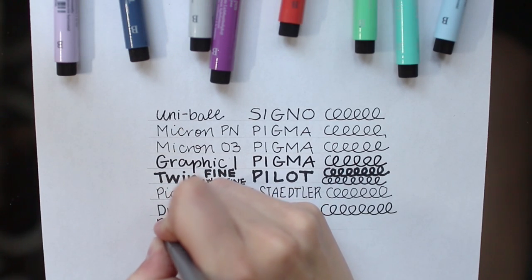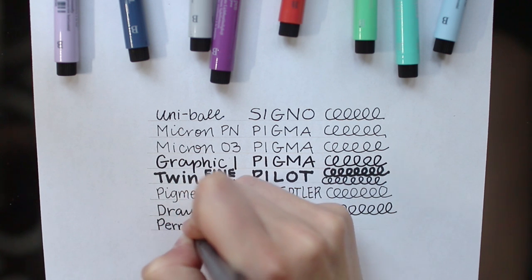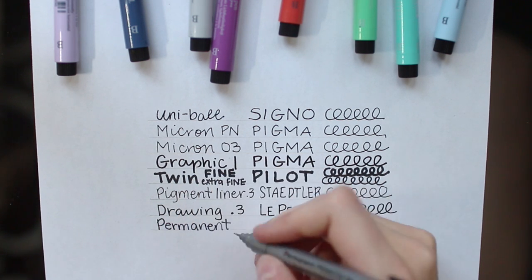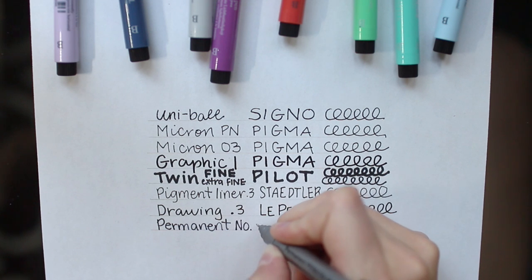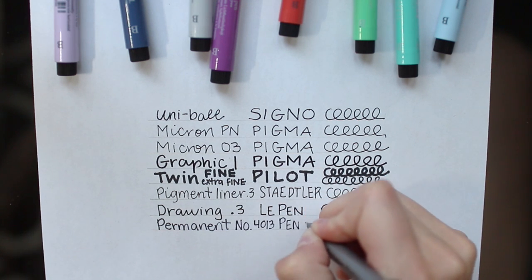Next we have the Alvin Penstix waterproof permanent marker. It has a 0.3 millimeter felt tip and it's another oil-based marker that can be used on other materials like plastic. But overall I don't enjoy the experience of this pen.